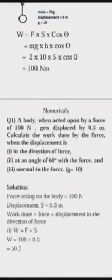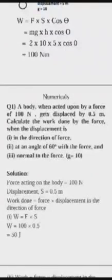So there is a numerical. You can see a body when acted upon a force of 100N, force here is 100N, it gets displaced by 0.5 meter. Calculate the work done by the force when the displacement is in the direction. Means first case you have to consider theta to be 0. So you will use the formula W = F × S × cos θ. Cos θ is 1 here because theta is 0. So the formula will be F × S, 100 × 0.5, that is 50 Joules.